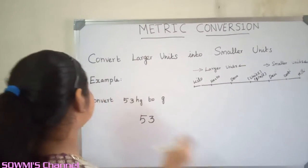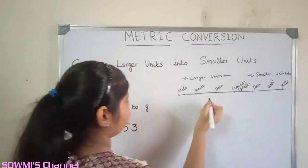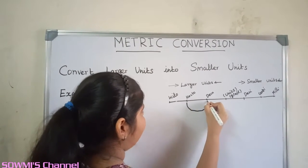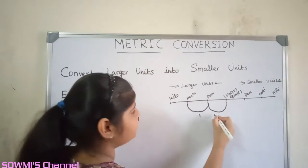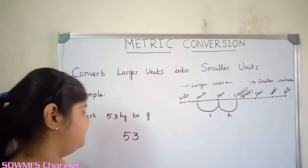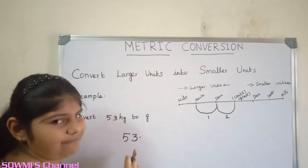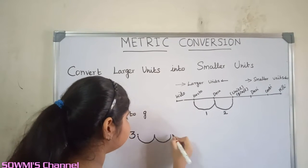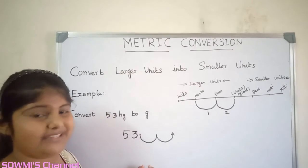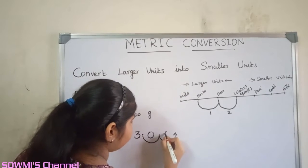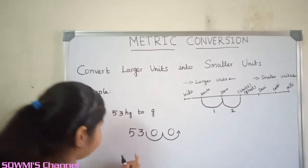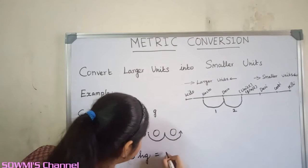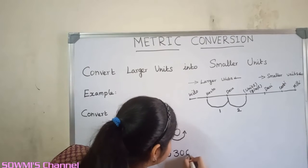Let us see one more example. Convert 53 hectograms to grams. First we have to count the jumps from hectograms to grams. There are two jumps to the right. So from the decimal point, we have to move two steps to the right. We have to fill zeros in the extra spaces. So the answer is 53 hectograms is equal to 5300 grams.